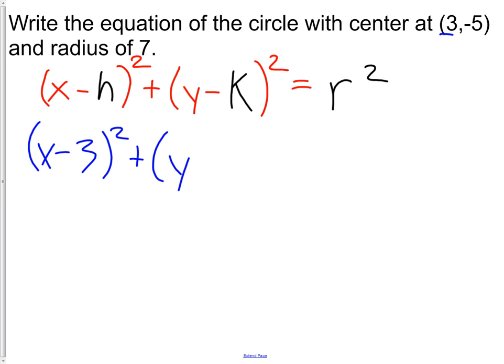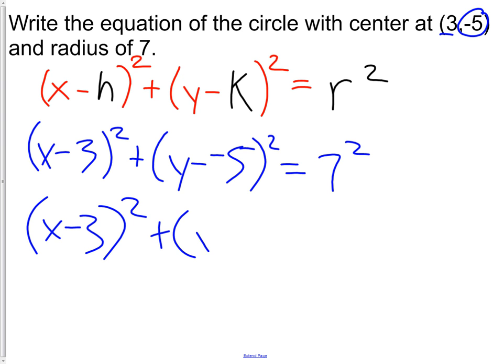Plus y minus my k value, which is negative 5, squared equals radius squared. So writing this in simplified form would be x minus 3 squared plus y plus 5 squared equals 49.